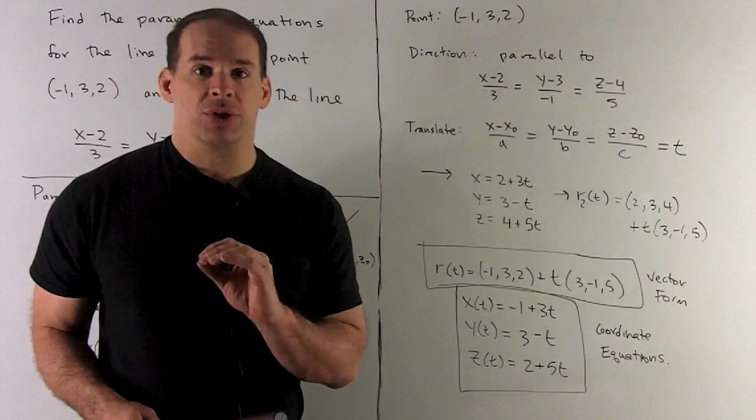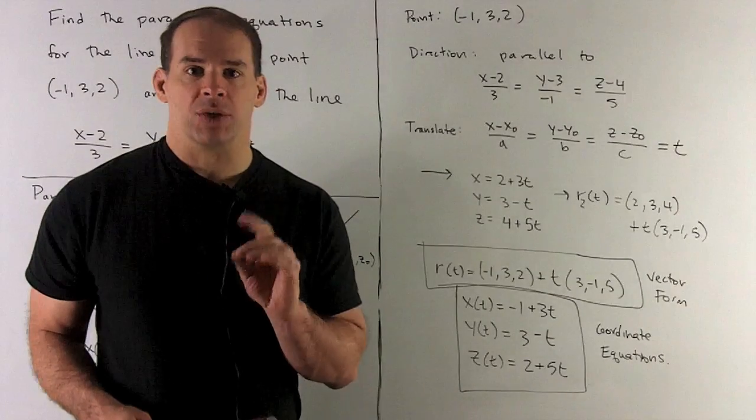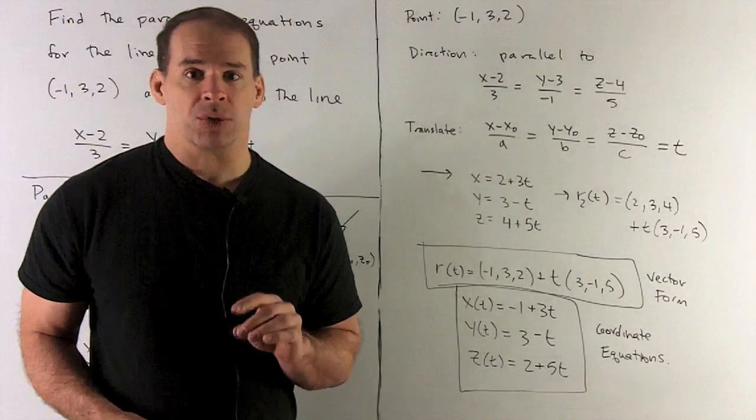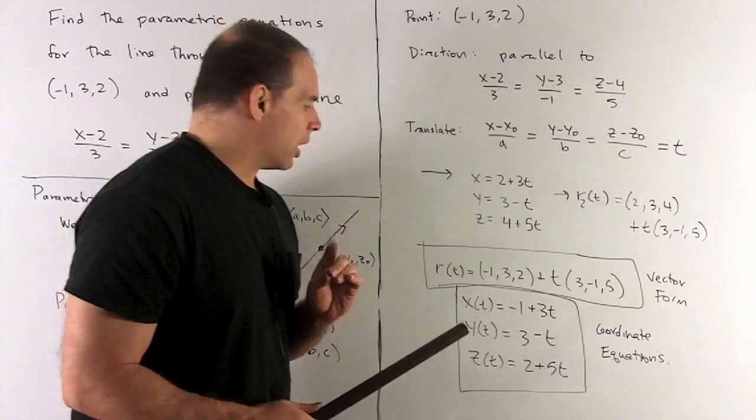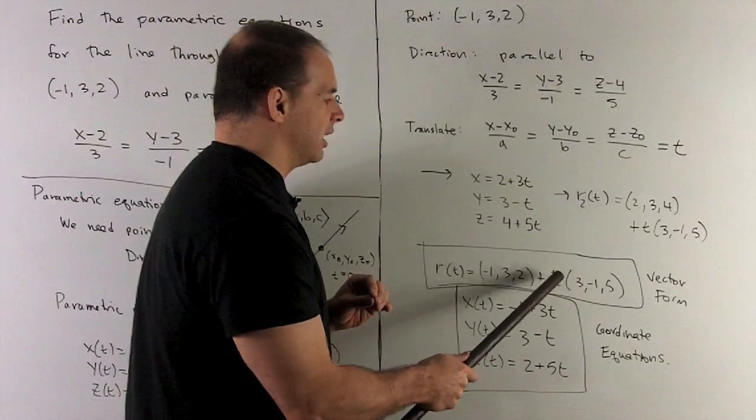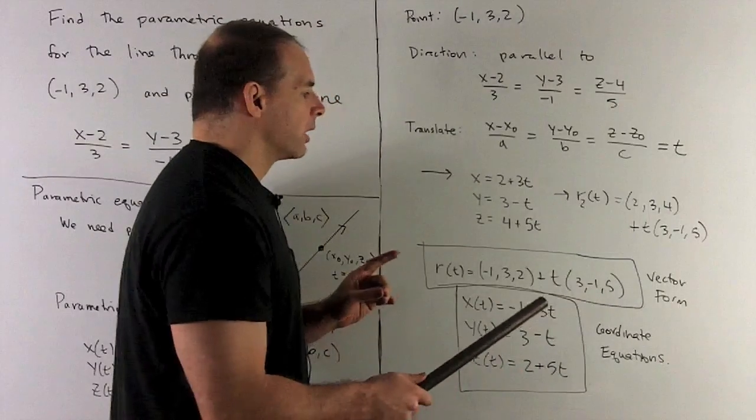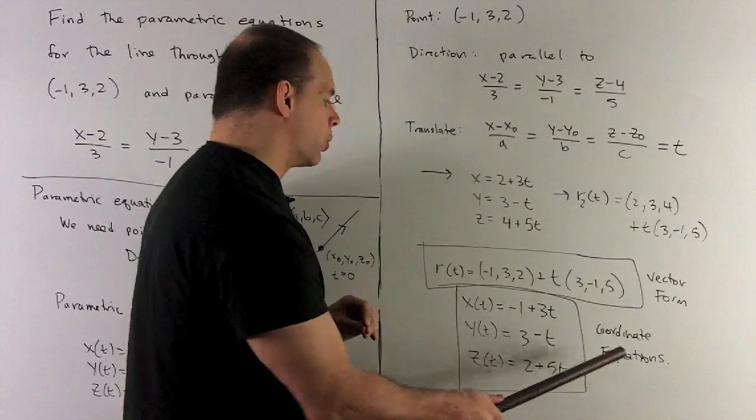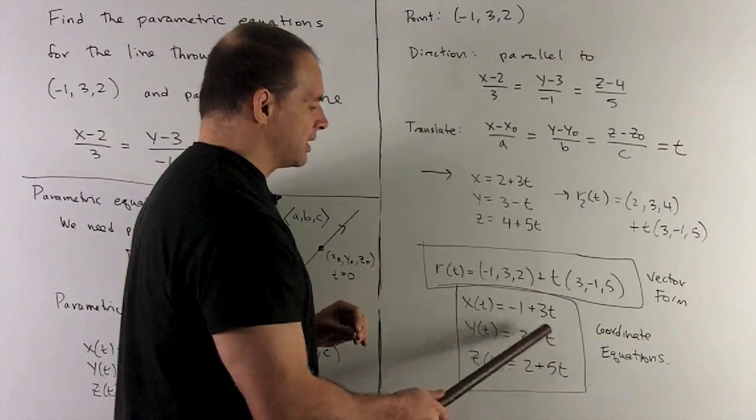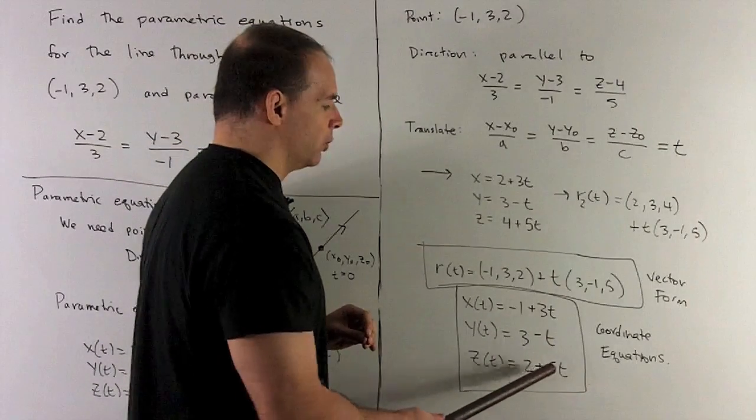Back to the original problem. We have point (-1, 3, 2) and direction (3, -1, 5). The vector form is (-1, 3, 2) plus t(3, -1, 5). The coordinate equations are x equals -1 plus 3t, y equals 3 minus t, z equals 2 plus 5t.